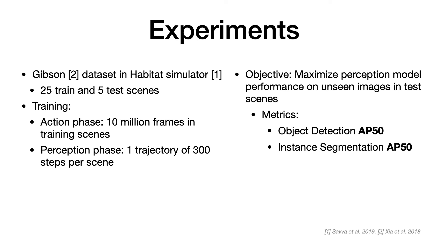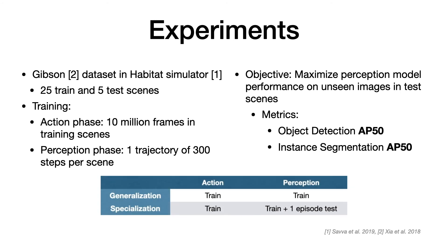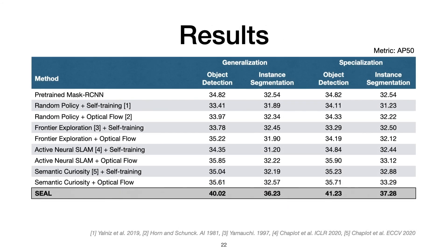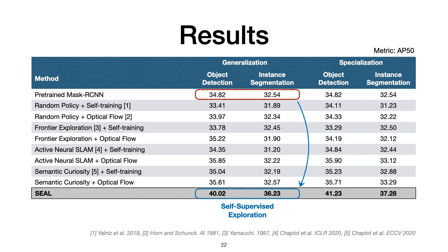We evaluate the SEAL framework in two settings: generalization, where both the action and perception phases use only training scenes, and specialization, where we allow the active exploration policy to gather one episode of experience in each test scene. The SEAL framework outperforms different combinations of action and perception baselines in terms of object detection and instance segmentation performance. These results show that SEAL can improve pre-trained Mask R-CNN performance from roughly 35 and 33 AP50 scores to 40 and 36 AP50 scores by just allowing self-supervised exploration in each test scene.